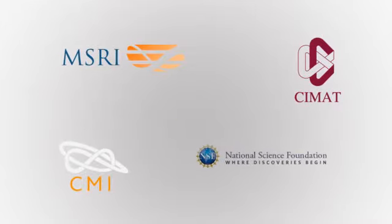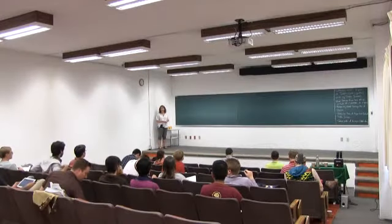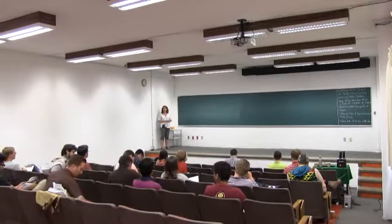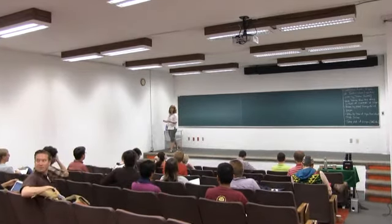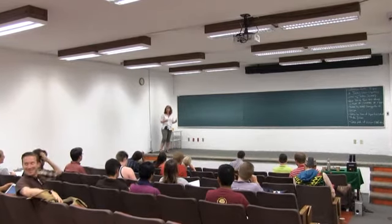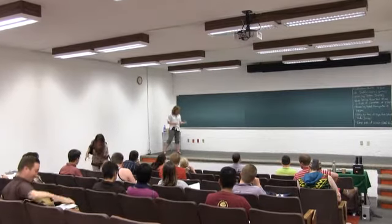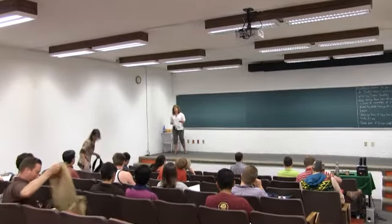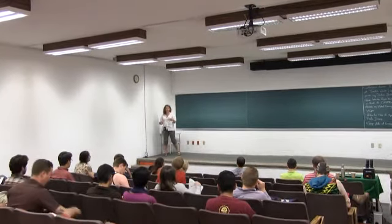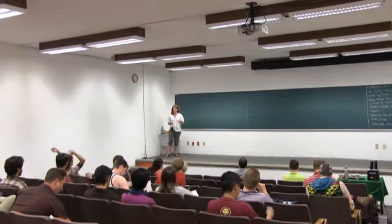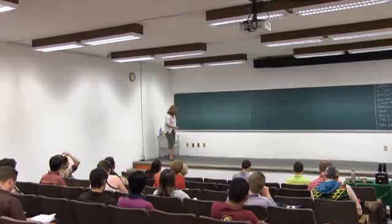Today we're going to actually get to the main topic of this mini-course, which we haven't really done so far. In some sense, a model category is one way to think about a homotopical category. What I want to do in the remaining two lectures is motivate it from a couple of different perspectives. Today I want to motivate it by starting with some things we've seen and try to generalize them, seeing how this leads to different approaches to homotopical categories.